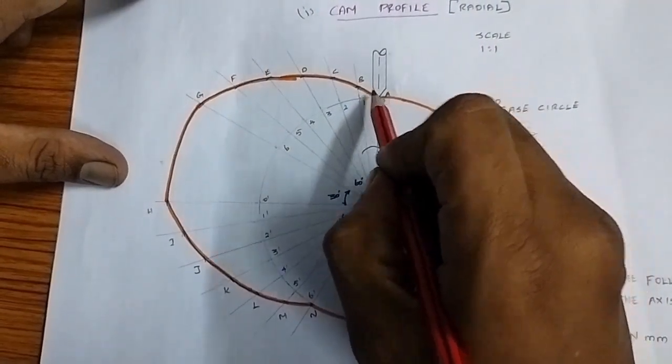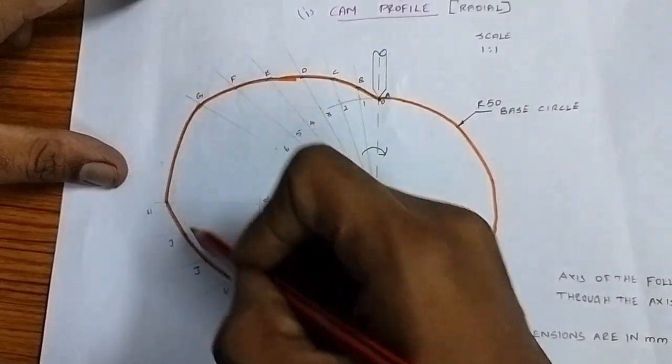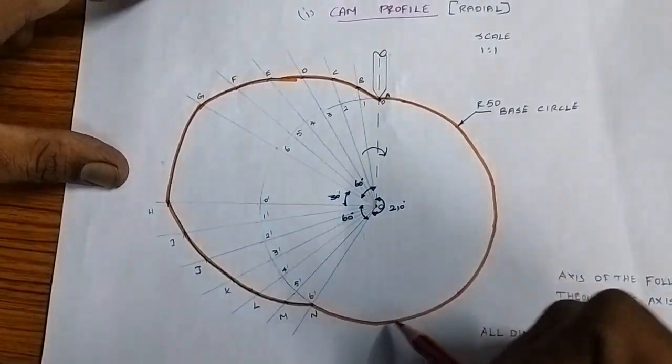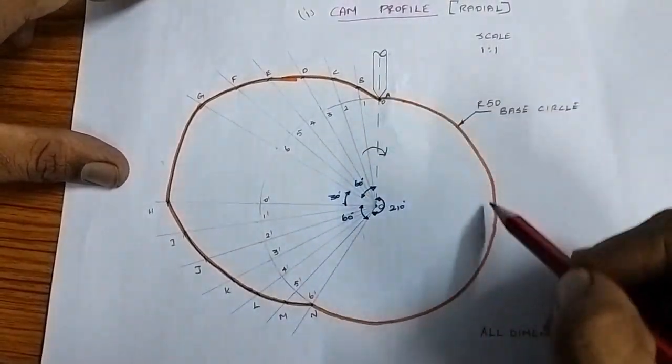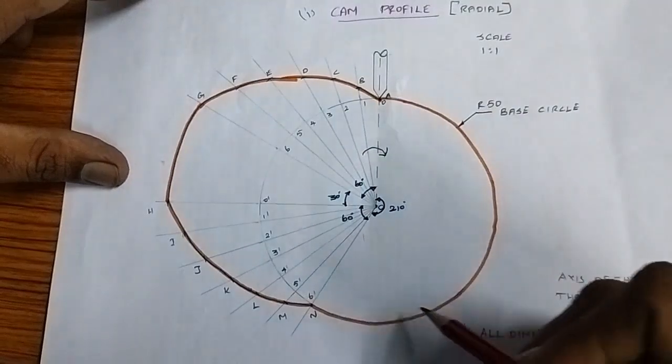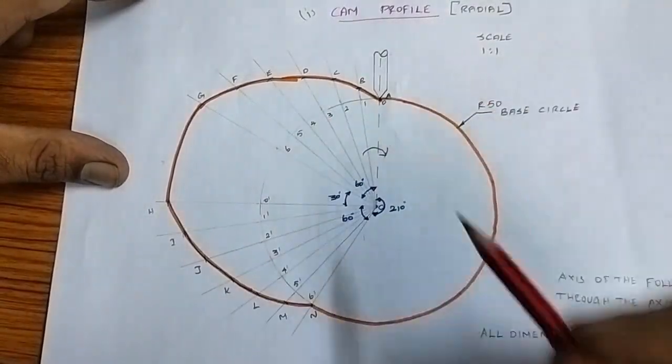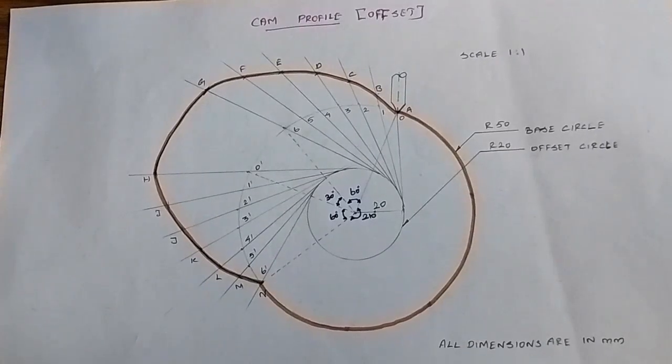Highlight the final cam profile from A back to A in orange color, using a dark pencil highlight to clearly show the cam profile outline.